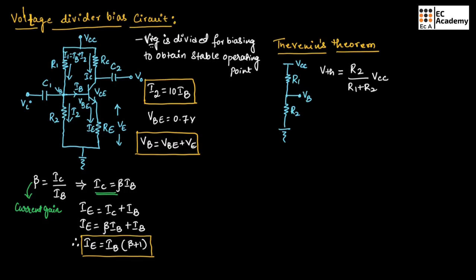We also need to find the Thevenin's resistance Rth, which equals R1 in parallel with R2. In the input side circuit, R1 is in parallel with R2, so Rth = R1·R2 / (R1 + R2).